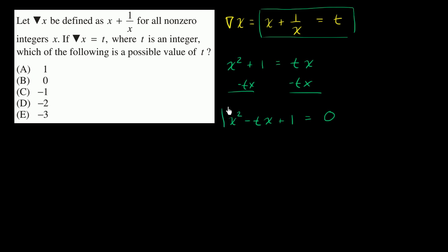Now this is interesting right over here. We have kind of a traditional quadratic equation right over here. And we just have to think about, for what values of t can we actually factor this so that we could get integer solutions for x?